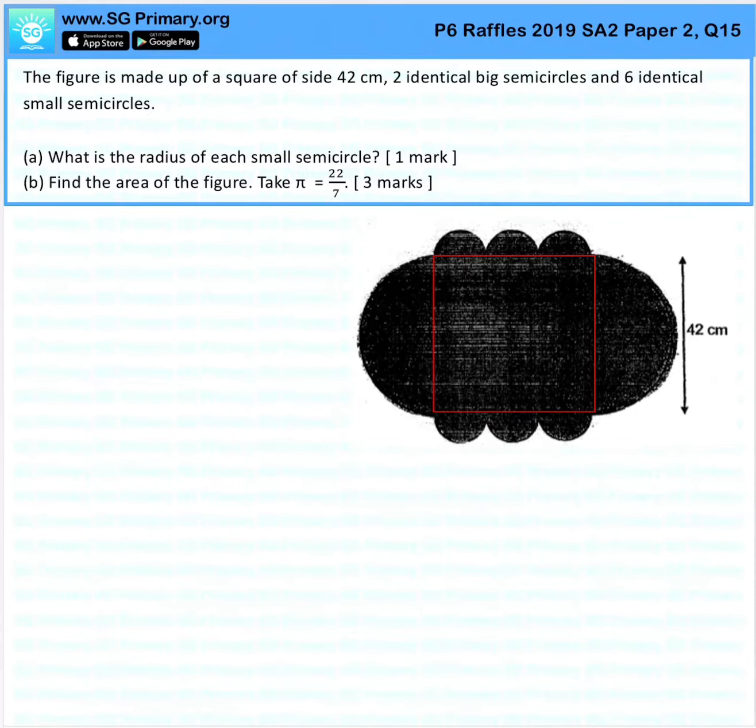What is the radius of each semicircle? Okay, so we know the sides are 42. We want the radius of each side of the semicircle. So 3 semicircles makes up one side, right? So we can break it apart even more.